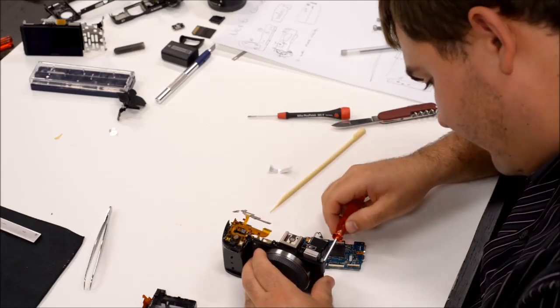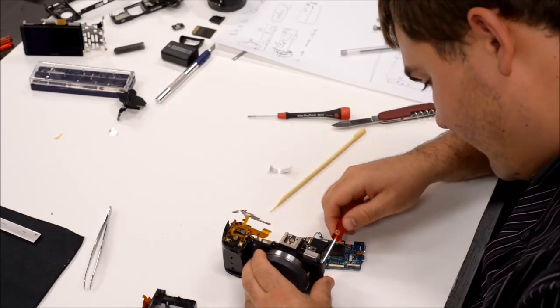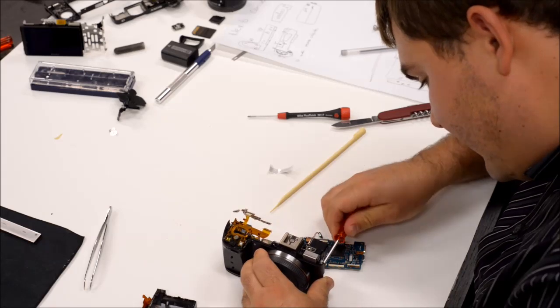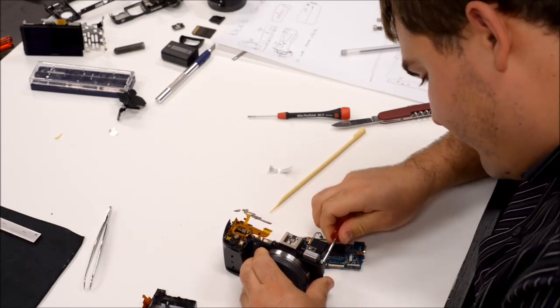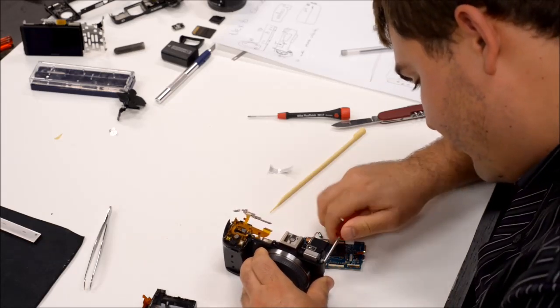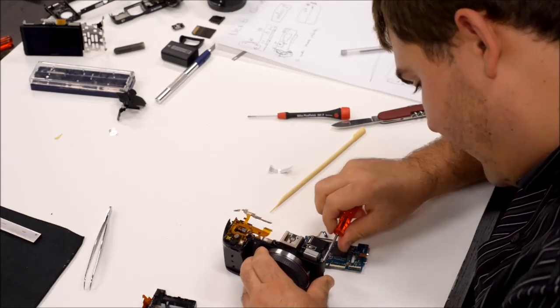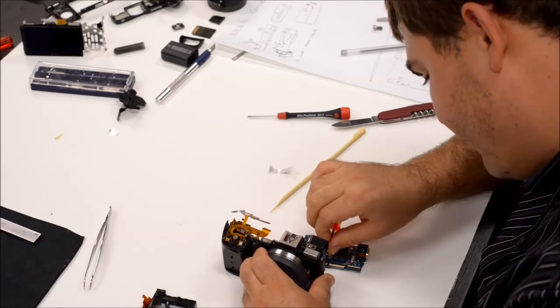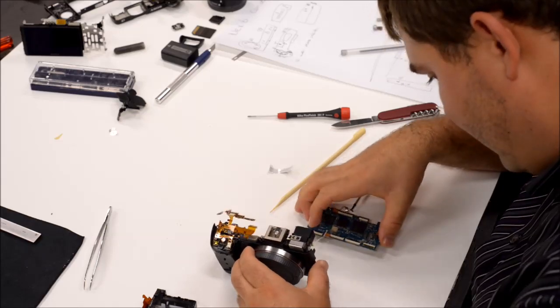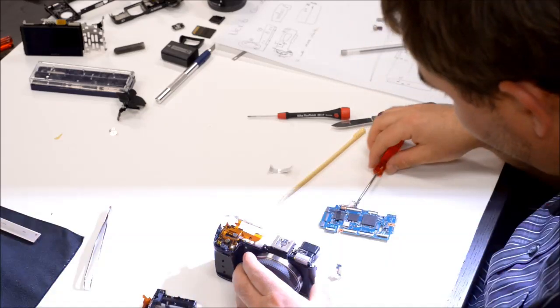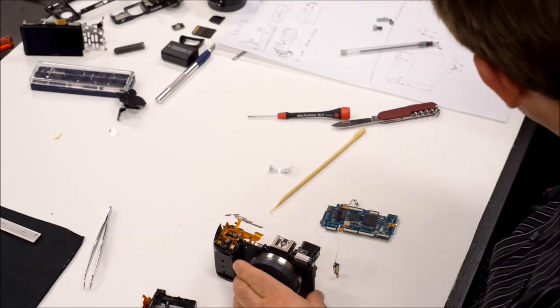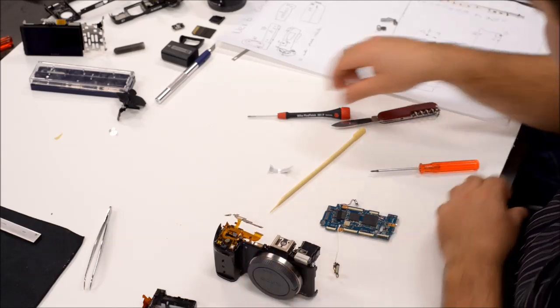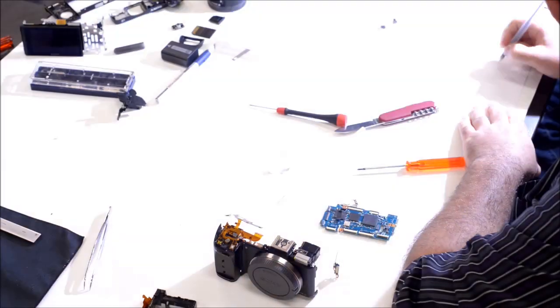And then this, the little white cable here, you cannot really see it, but I'll take it out for a moment. It is connected to some tiny part here in the front of the camera and I assume that will be maybe like the wifi antenna or something.